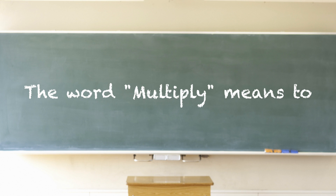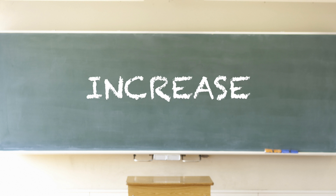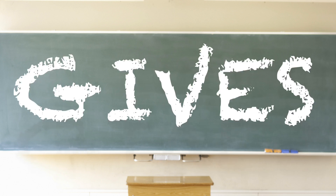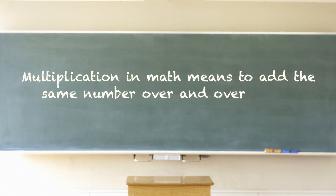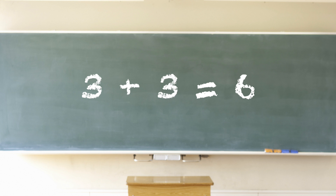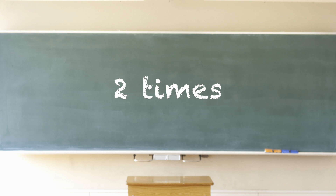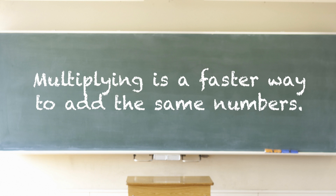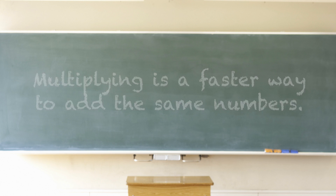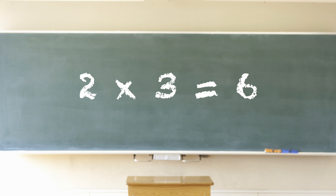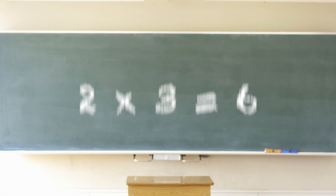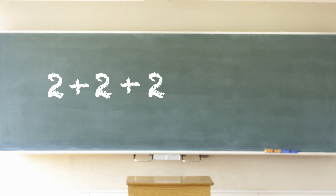Multiplication — the word multiply means to increase. Multiplication in math means to add the same number over and over again. For example, three plus three equals six — you just multiplied the number three two times. Multiplying is a faster way to add the same numbers. You could write three plus three like this: two times three equals six.